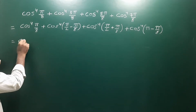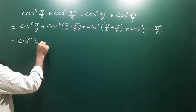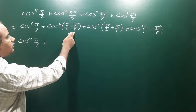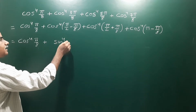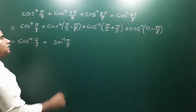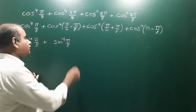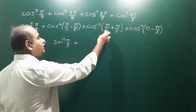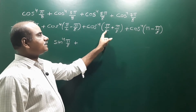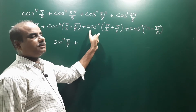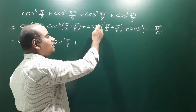So the expression becomes cos⁴(π/8). Now, cos(90° - θ) = sin θ, and cos(90° + θ) = -sin θ — that is in the second quadrant where cosine is negative. But since the power is an even number...